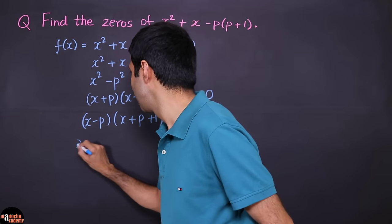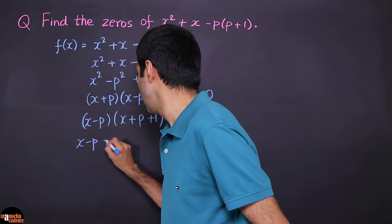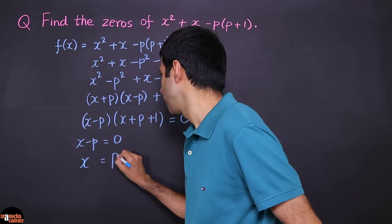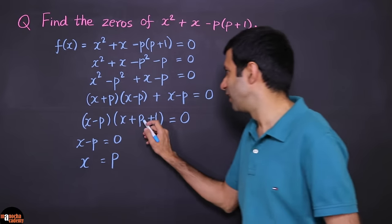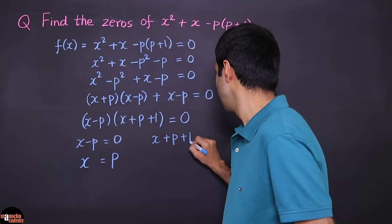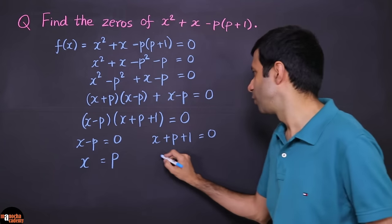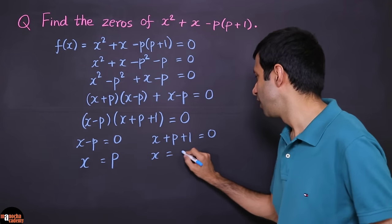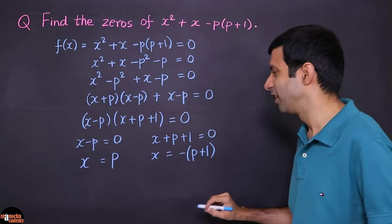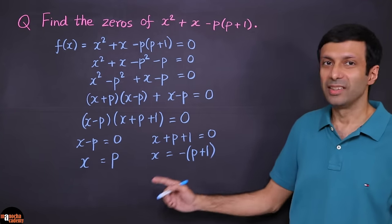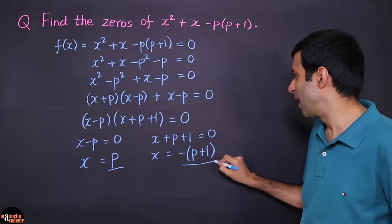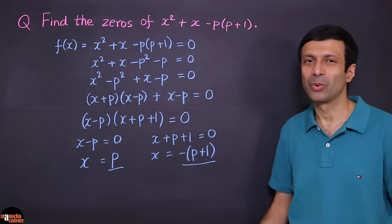So either x - P = 0, giving x = P, or x + P + 1 = 0, giving x = -(P+1). So the two zeros of this polynomial are P and -(P+1).